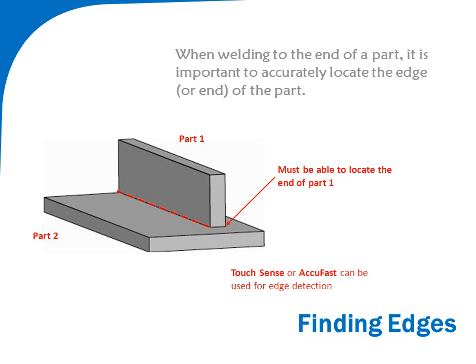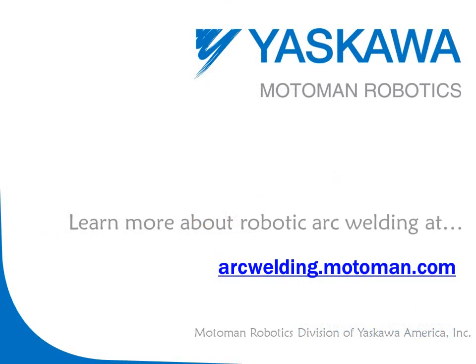Seam finding flexibility can be enhanced by finding the edge or end of parts, or by searching multiple locations along an extended seam. Macro job routines are provided with touch sensing and AccuFast to detect edges. Seam finding tools can also be used for error proofing by detecting clamp positions or the presence of parts.